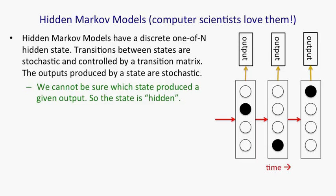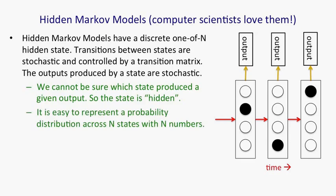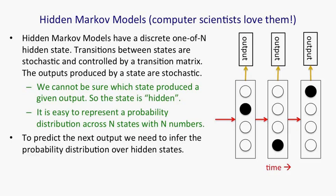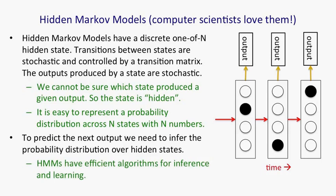In a sense, the states are hidden behind this probabilistic veil, and that's why they're called hidden. Historically, the reason hidden units in a neural network are called hidden is because I like this term, it sounded mysterious, so I stole it for neural networks. It is easy to represent a probability distribution across N states with N numbers. So, the nice thing about a hidden Markov model is we can represent the probability distribution across its discrete states. And to predict the next output from a hidden Markov model, we need to infer what hidden state it's probably in. It turns out there's an easy method based on dynamic programming that allows us to take the observations we've made and, from those, compute the probability distribution across the hidden states. Once we have that distribution, there's a nice elegant learning algorithm for hidden Markov models, and that's what made them so appropriate for speech. And in the 1970s, they took over speech recognition.